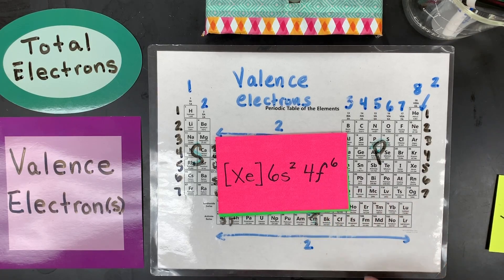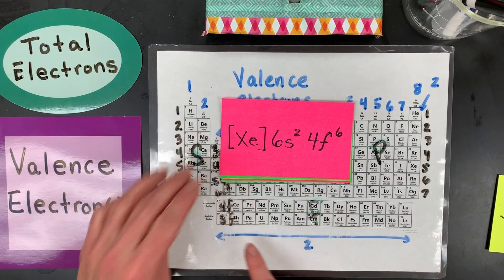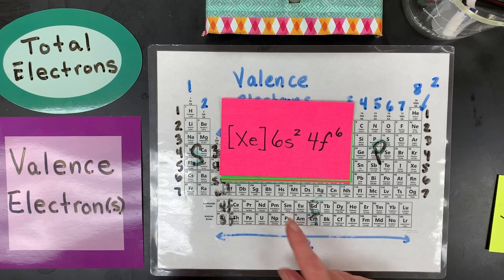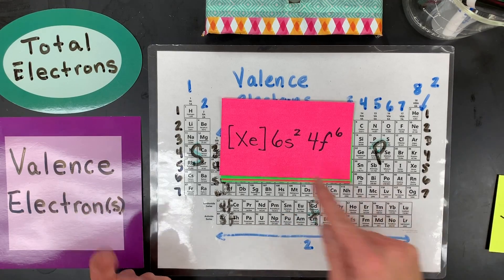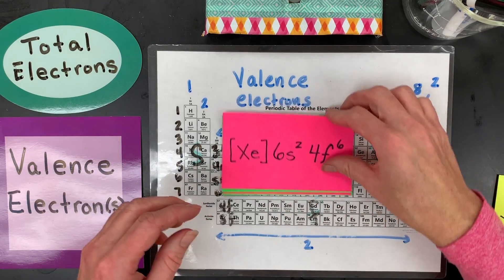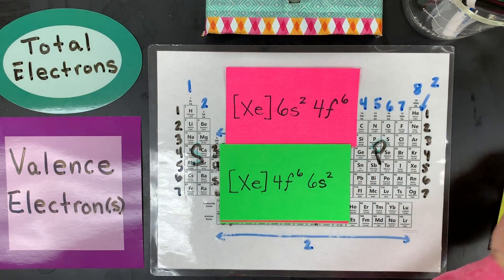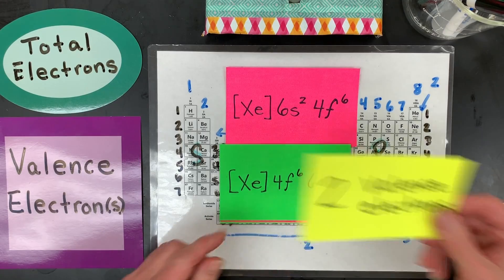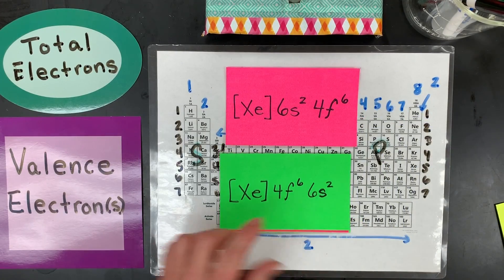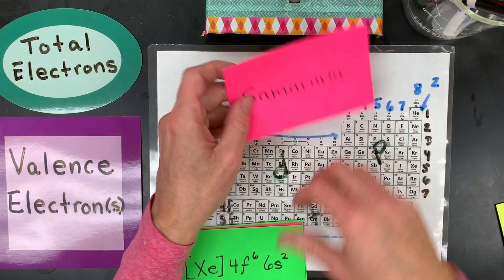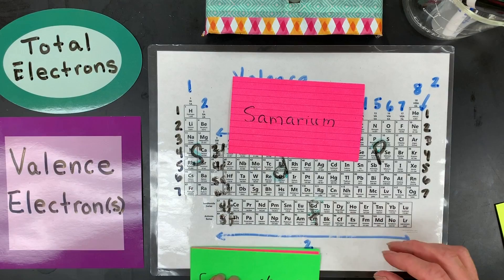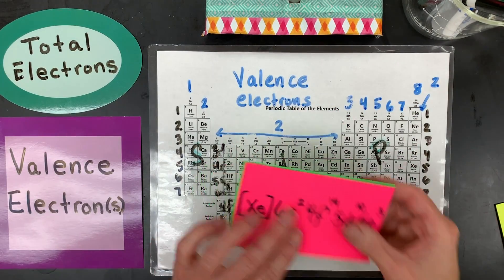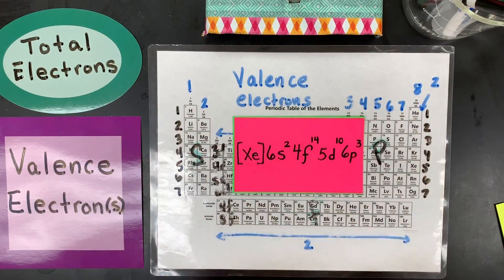Getting a little trickier — this is where we're filling into the 4f6, going 1, 2, 3, 4, 5, 6 into the f block. So this is samarium. The quick answer is the valence is two, because only the 6s2 electrons count — they are in the outermost energy level. The 4f electrons are actually inner electrons even though they fill later.